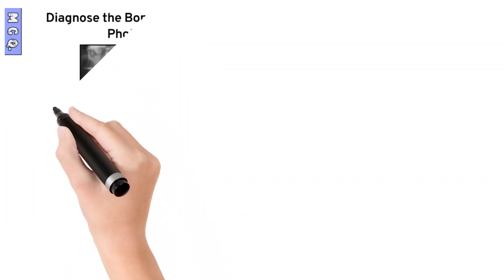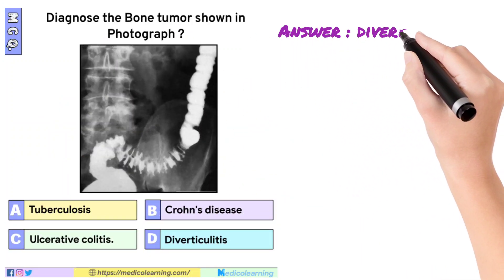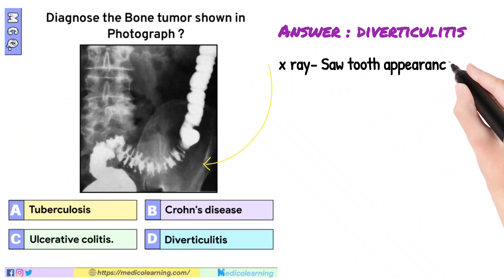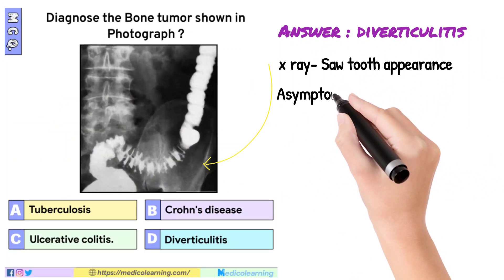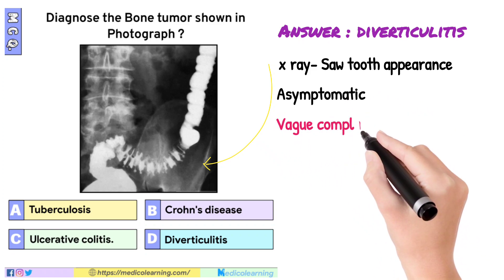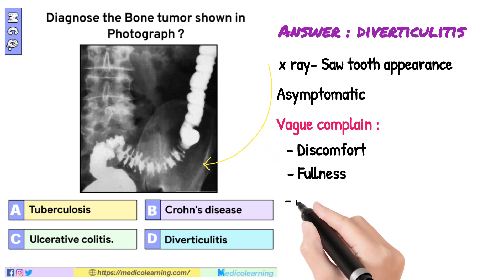In this question, the answer is diverticulitis. The X-ray shows a saw-tooth appearance. Symptoms may be asymptomatic or include vague complaints such as discomfort, fullness, bloating, and flatulence.